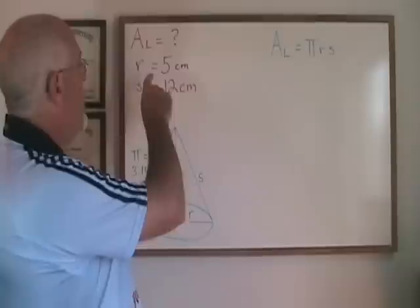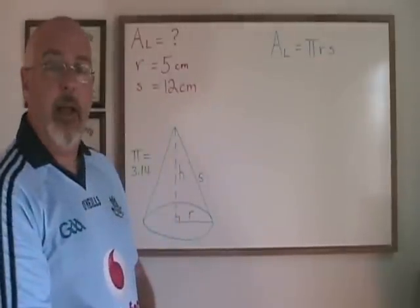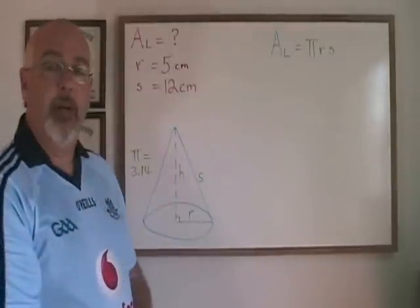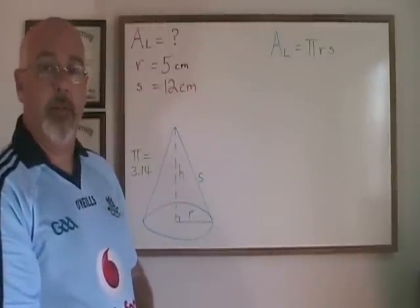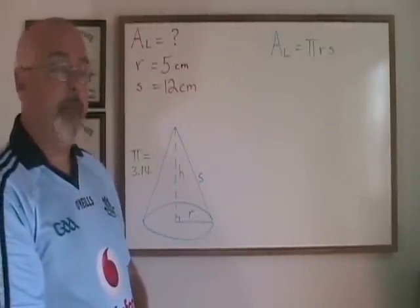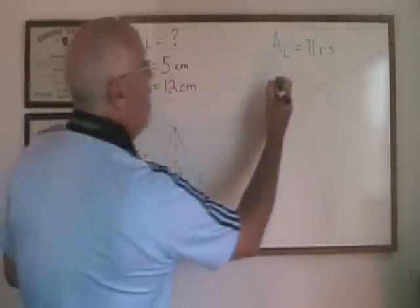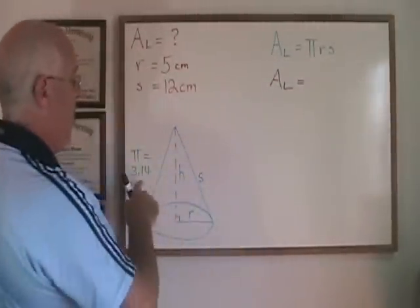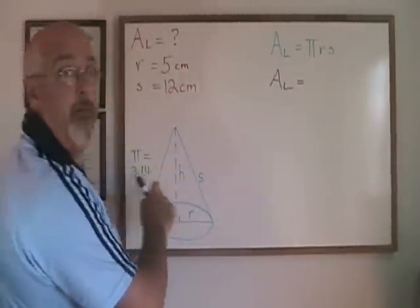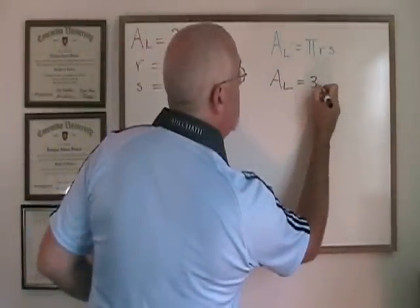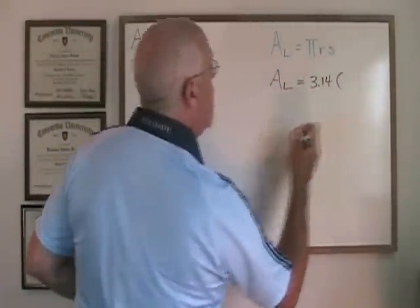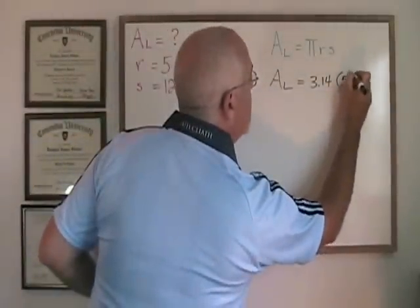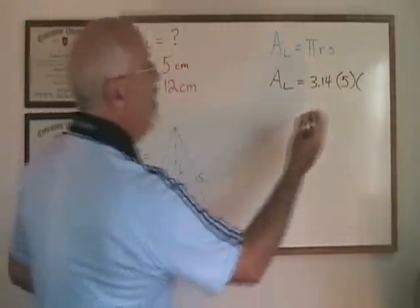If we are given the radius and the slant height and asked for the lateral area, as we are in this example, all we have to do is plug in our numbers and simplify. AL is our unknown, pi is 3.14 for these examples, r is 5, and s is 12.